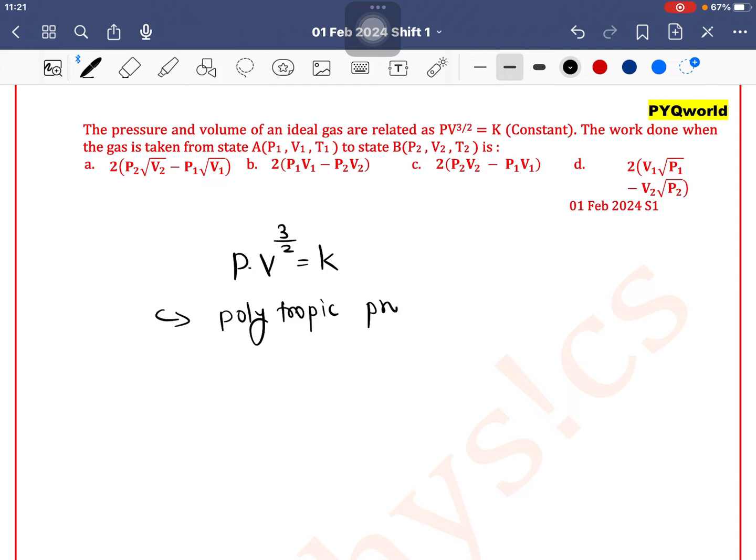If it is a polytropic process, then the process equation is P into V to the power A is equal to K. If we compare both equations, then we will get A is equal to 3 by 2.